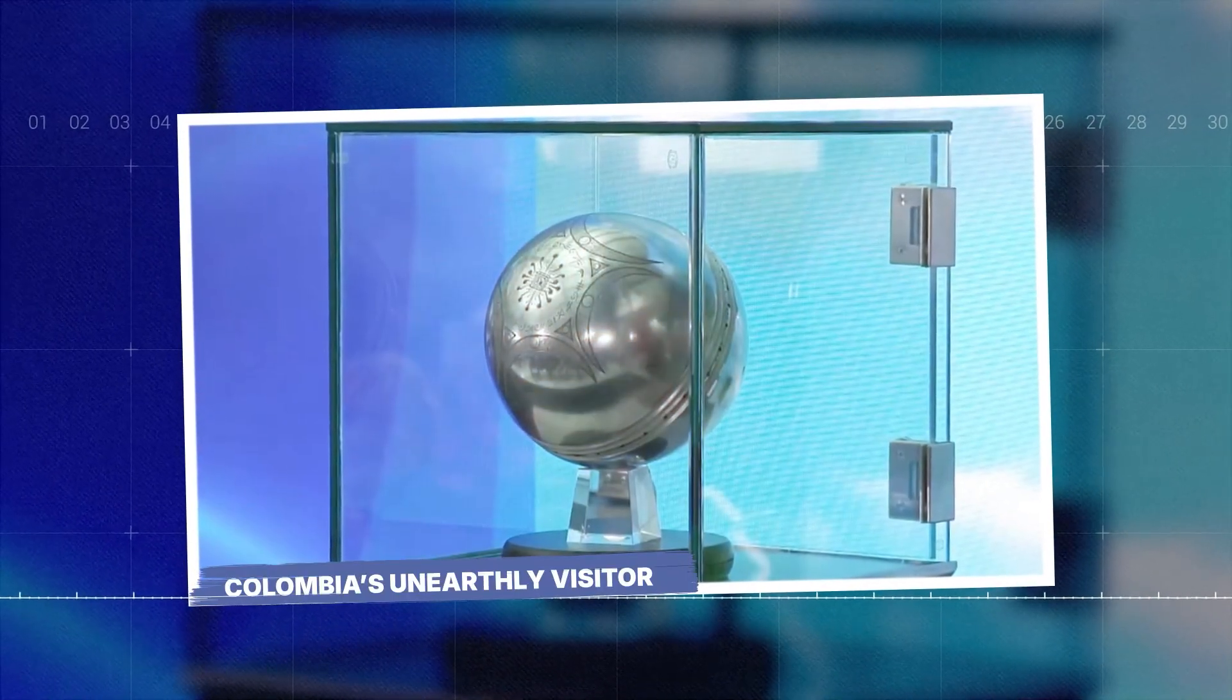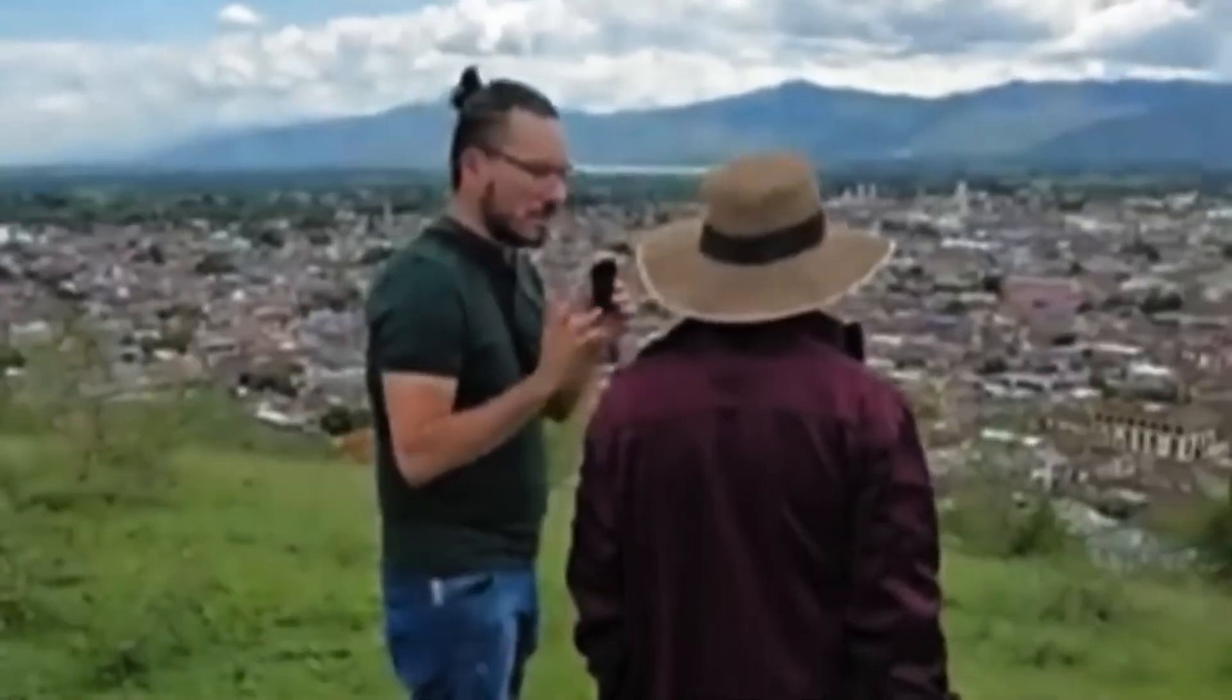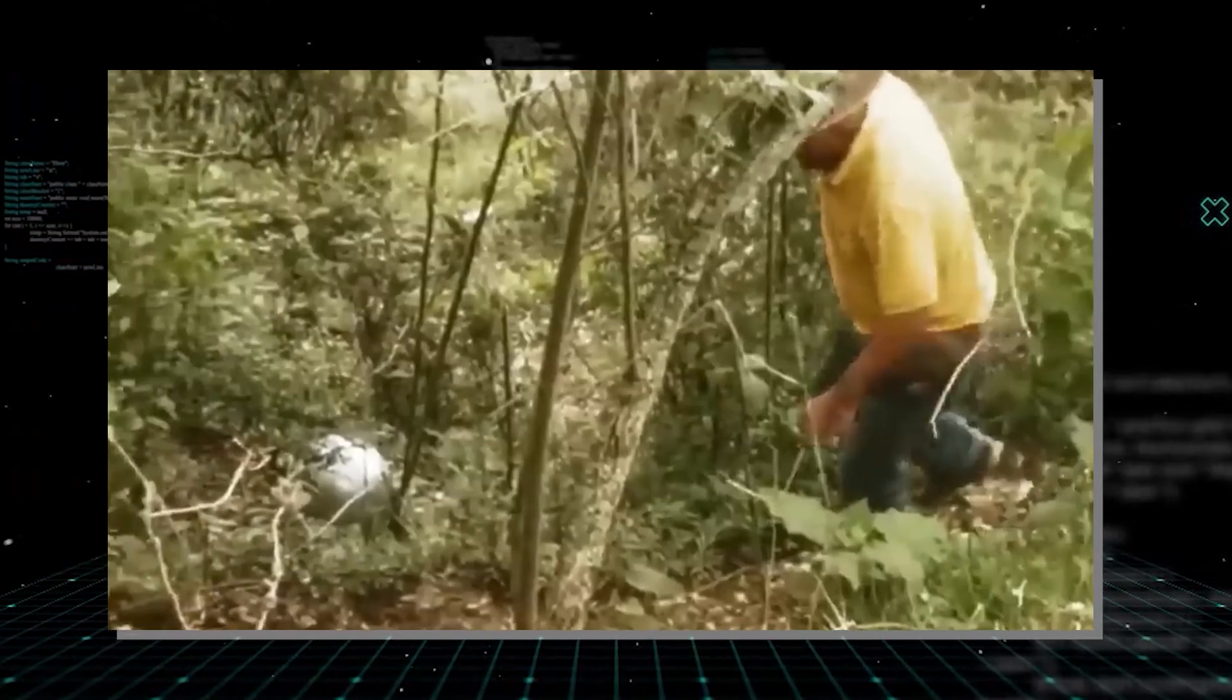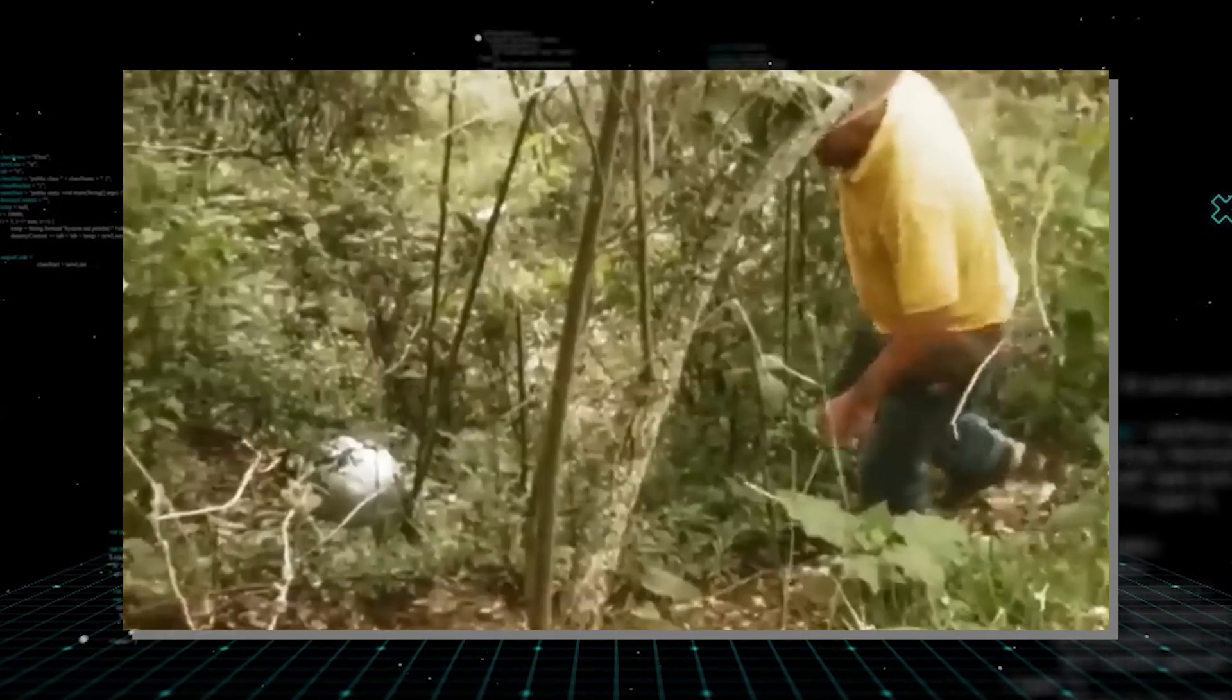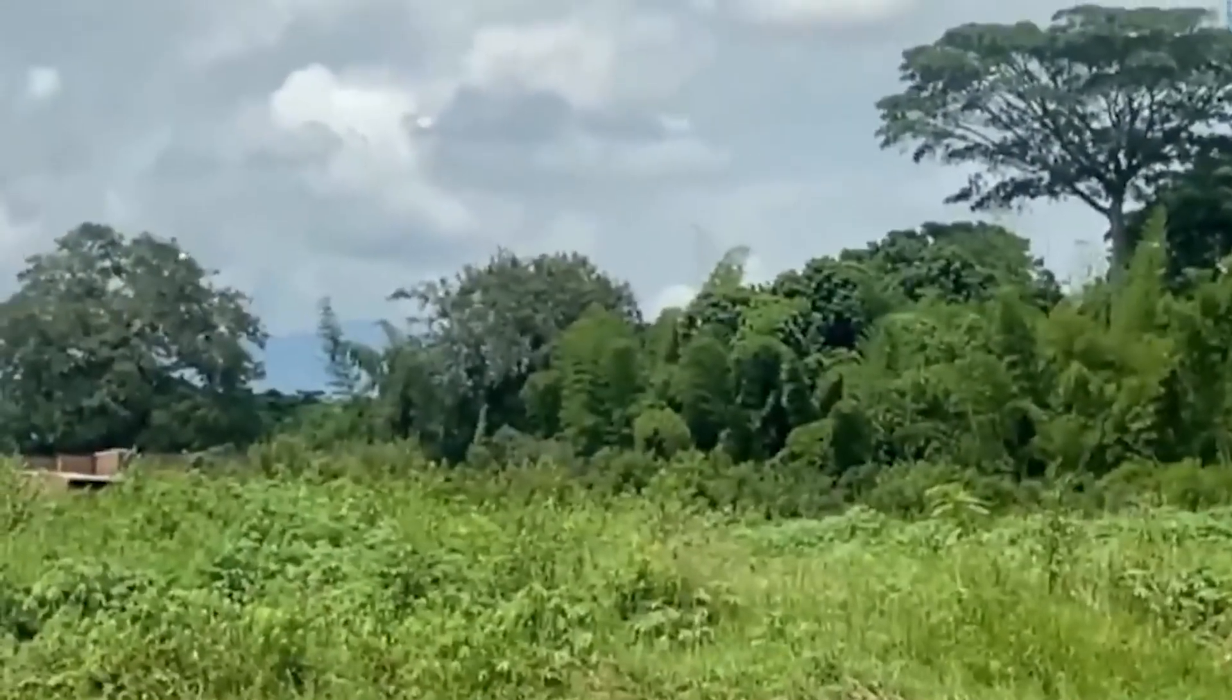Colombia's unearthly visitor. The problem started the moment investigators arrived. The sphere was resting in a 30-foot circle of completely dead grass. Not burned, not flattened, desiccated. Every plant, every insect, every microbe in that circle had every drop of moisture pulled from its cells.